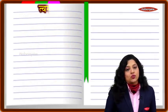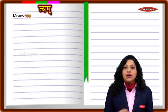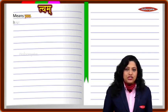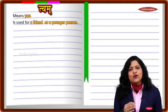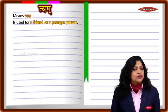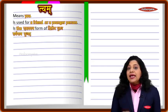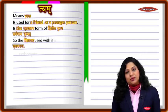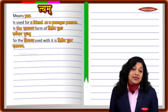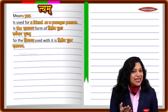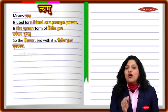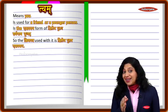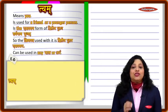'Twam' means 'you' and is used for a friend or a person who is younger, with whom you speak informally. It is the ekavachana form of the dvithiya purush sarvanam 'yushmad.' Because the karta is dvithiya purush ekavachana, the kriyapada used with it also has to be dvithiya purush — as in 'twam khadasi.'